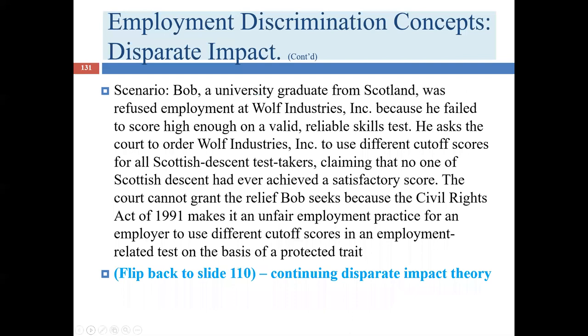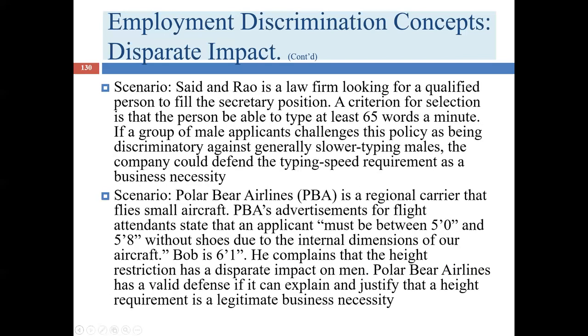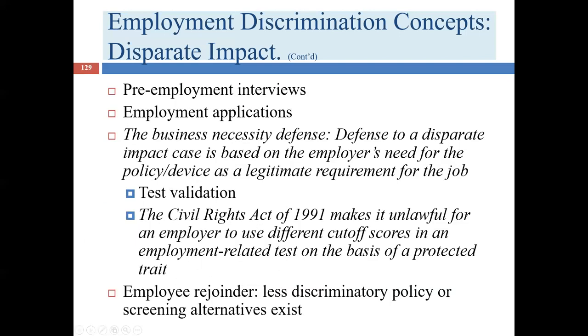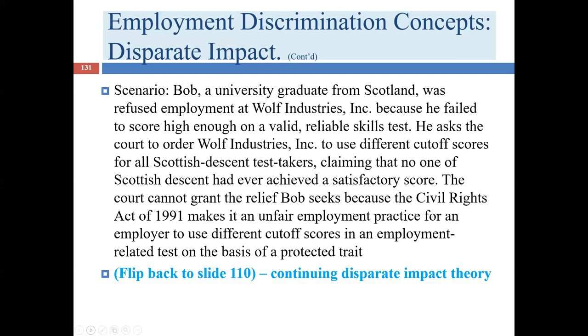Third scenario: Bob is a university graduate who wasn't offered a job because he failed to score high enough on a valid test. He takes the employer to court, arguing that because he is from Scotland he should have a different cutoff level, claiming no one of Scottish descent has ever achieved a satisfactory score — though he is the only Scottish candidate who has ever taken the test. The court is absolutely barred from giving Bob what he wants because the 1991 statute prohibits different cutoff scores based on group membership.